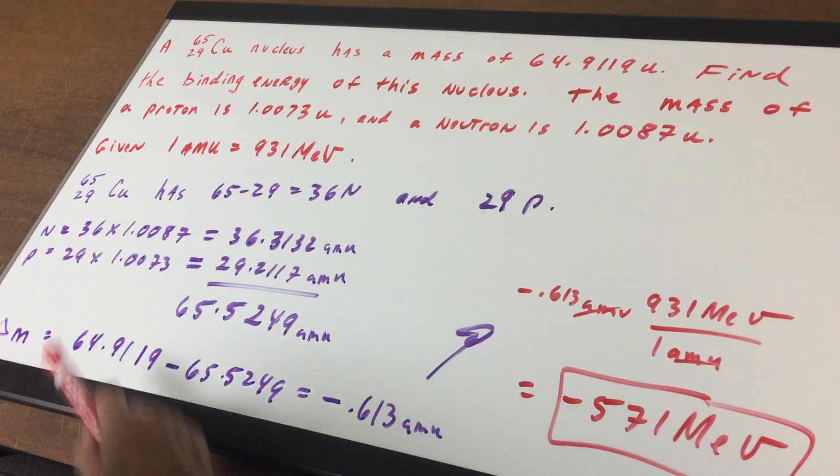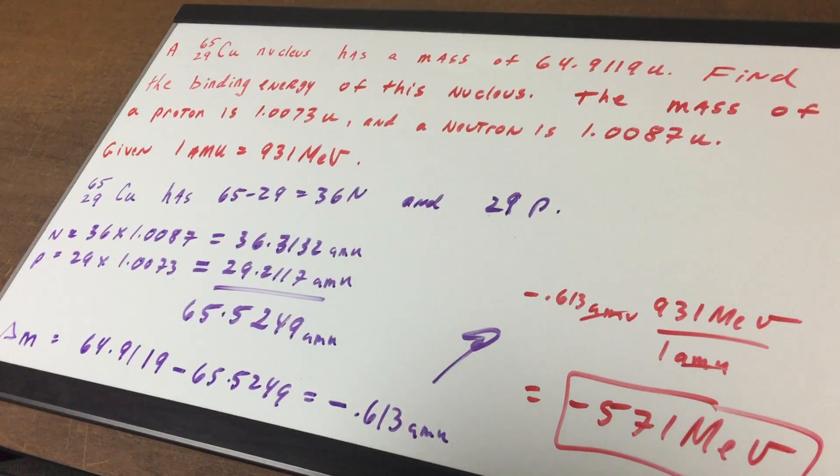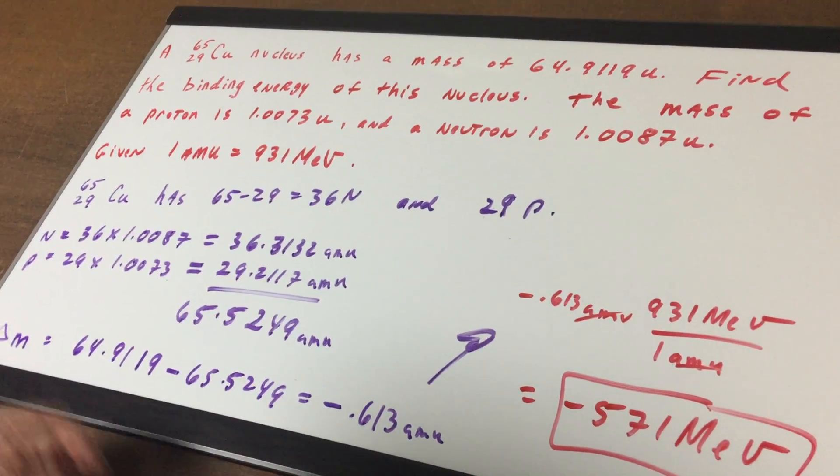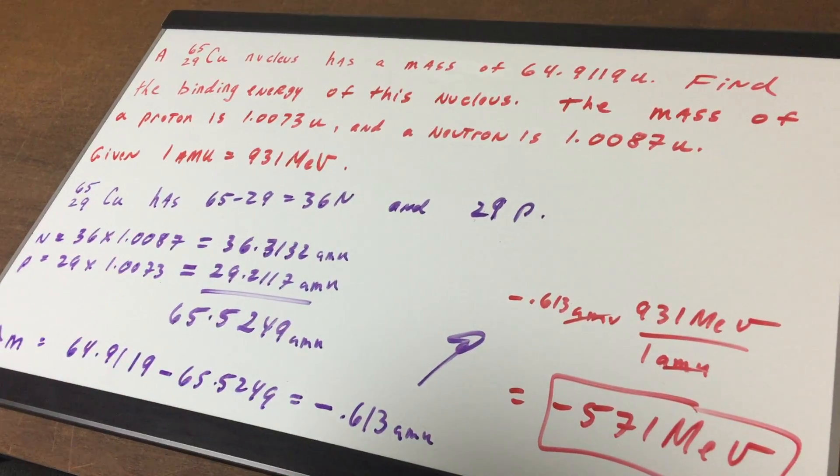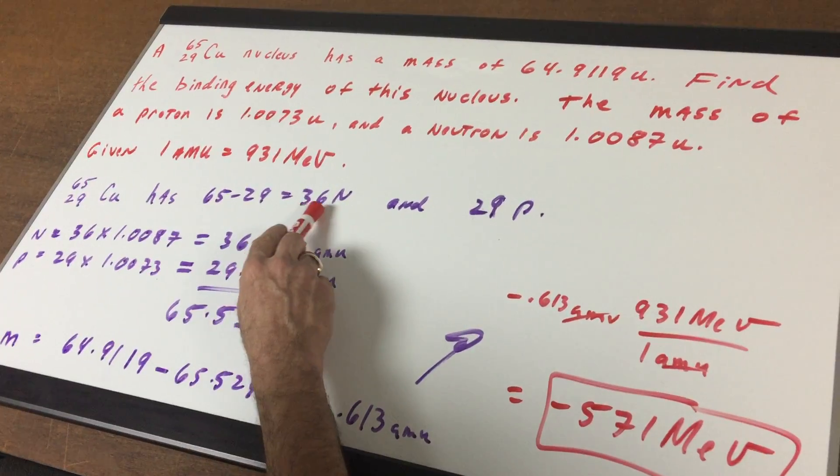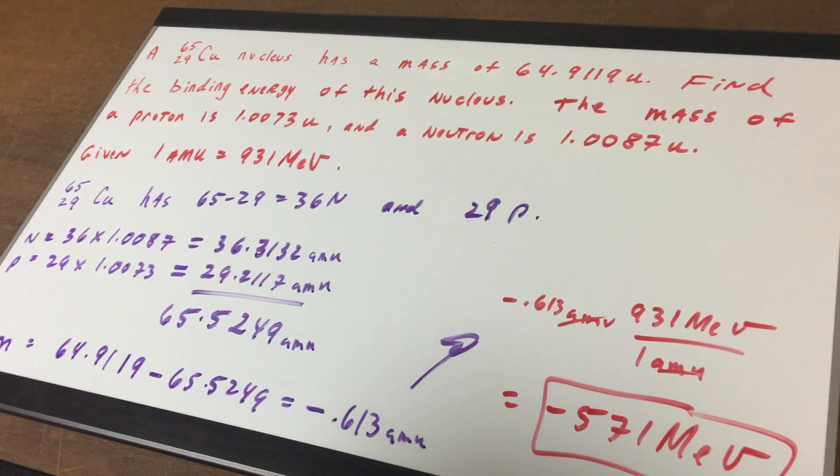First, take copper-65-29. If you subtract 65 minus 29, that gives you the number of neutrons, which is 36.